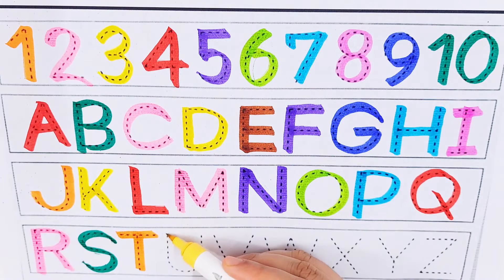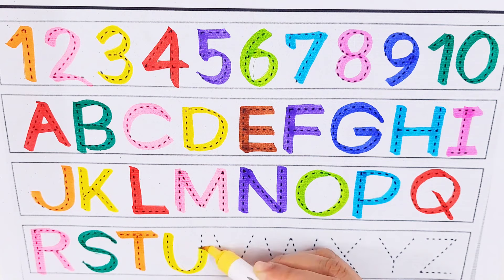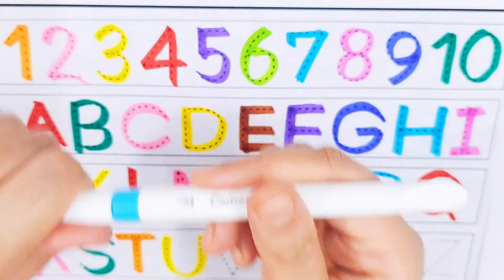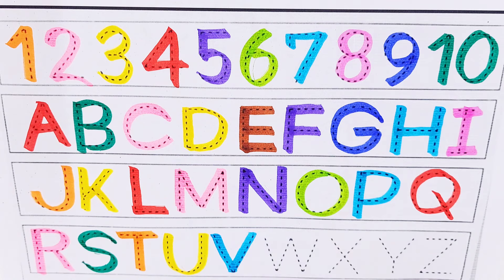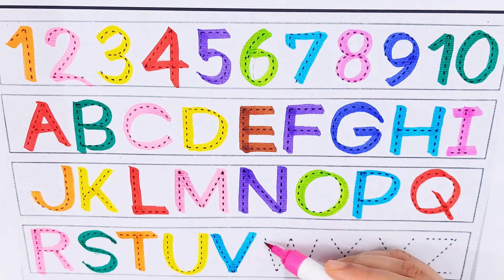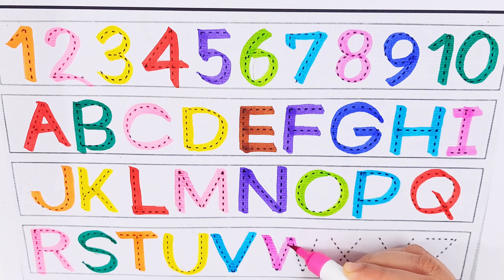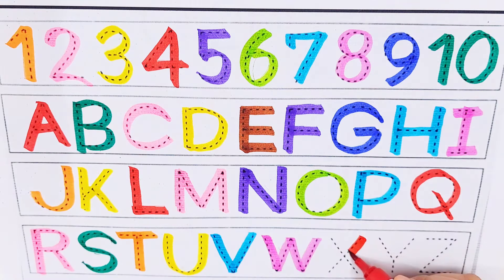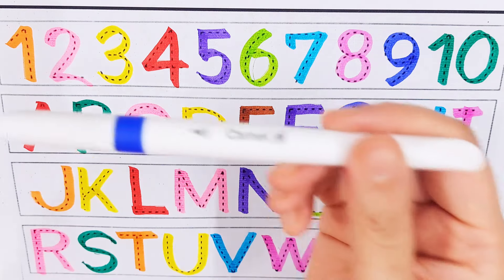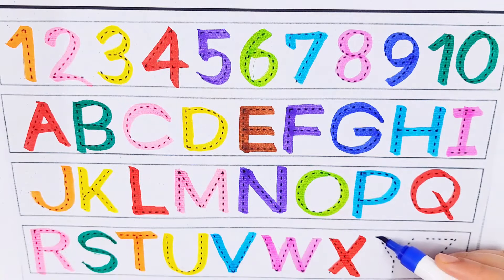Yellow color U, U for universe. Sky blue color V, V for vanilla. Purple color W, W for wax. Red color X, X for xylophone.